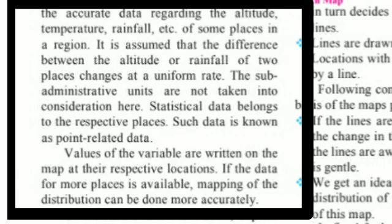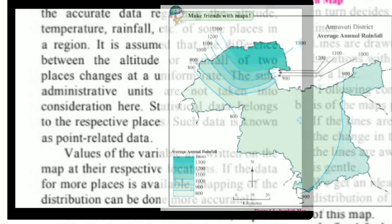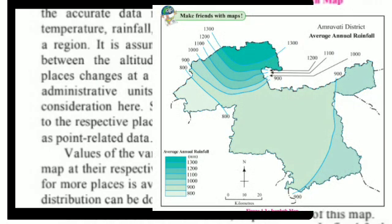Here, dear students, you can see a map — an isopleth map of a district. You can see the values of particular locations plotted on the map, and the isopleth lines are drawn connecting equal values shown on the map.